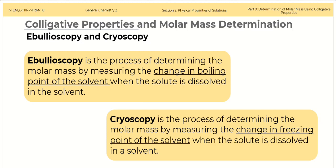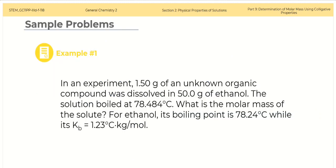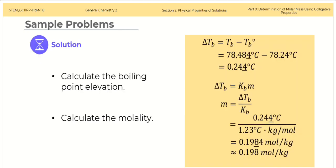For simplicity, we will solve problems involving non-electrolyte solute. In an experiment, 1.50 grams of an unknown organic compound was dissolved in 50 grams of ethanol. The solution boiled at 78.484 degrees Celsius. What is the molar mass of the solute? For ethanol, its boiling point is 78.24 degrees Celsius while its Kb is equal to 1.23 degrees Celsius kilogram per mole.